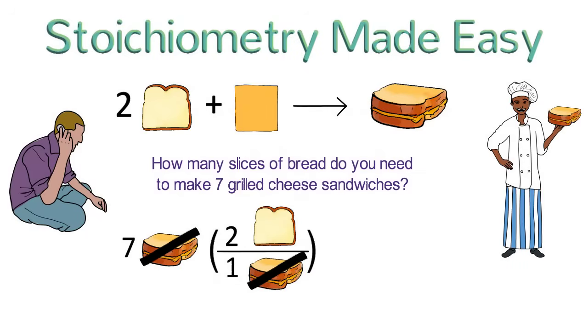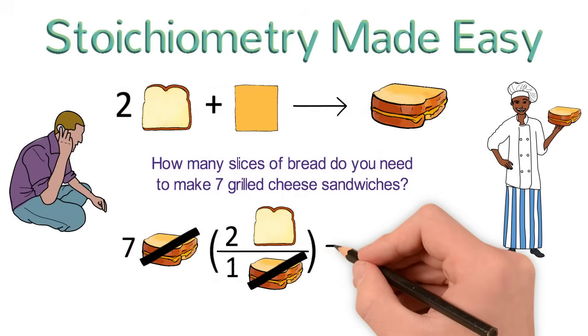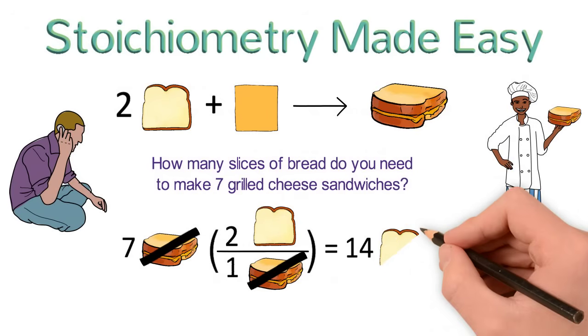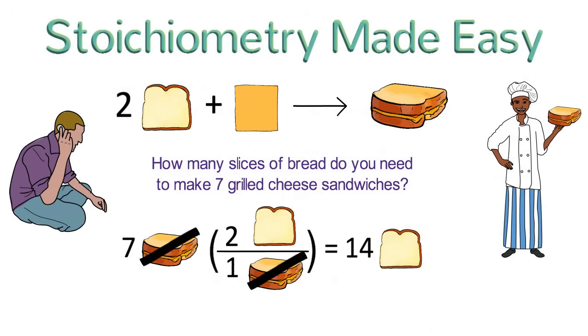and we are left with seven times two slices of bread to make 14 slices of bread, which is our final answer. Notice that this is really a unit conversion problem, and the balanced equation is our conversion factor.